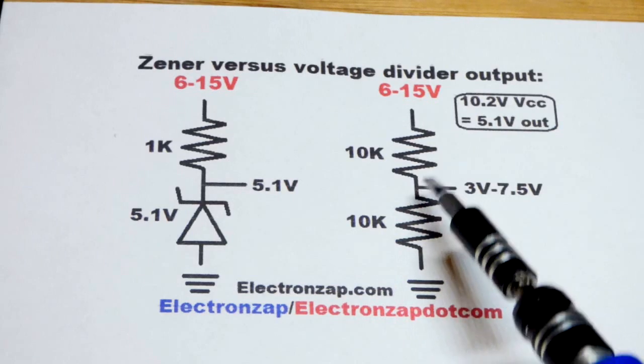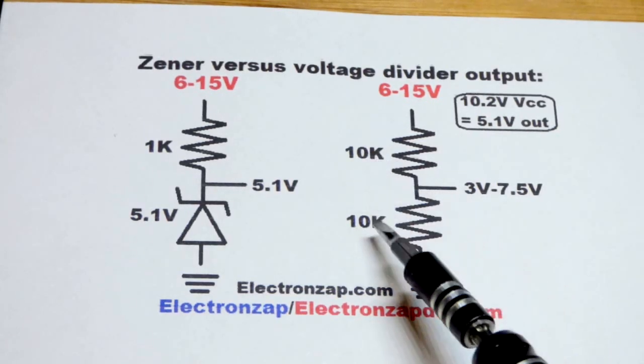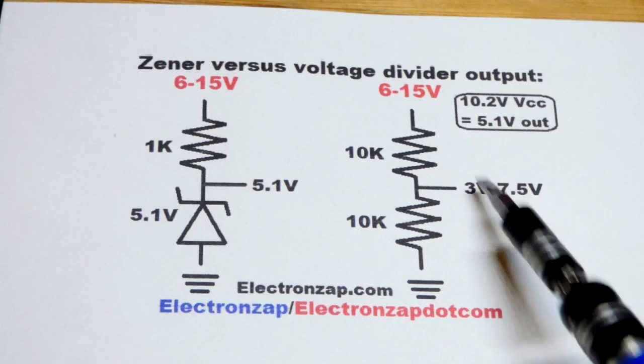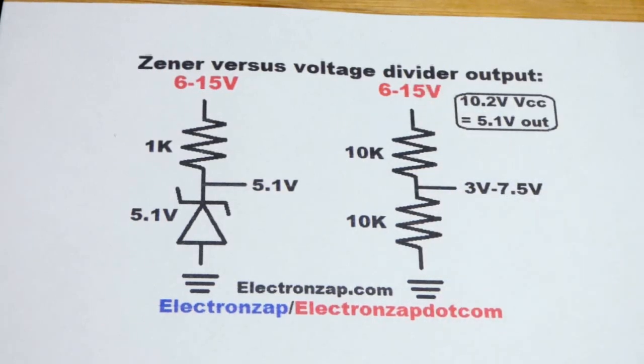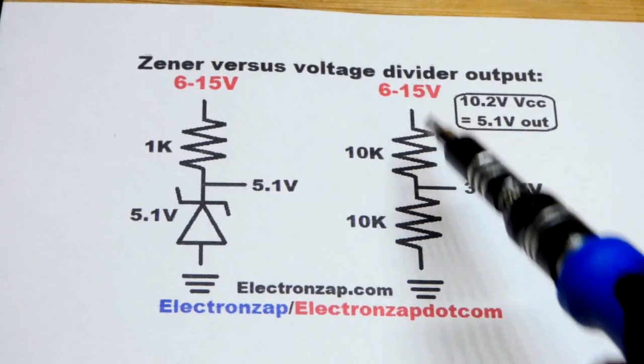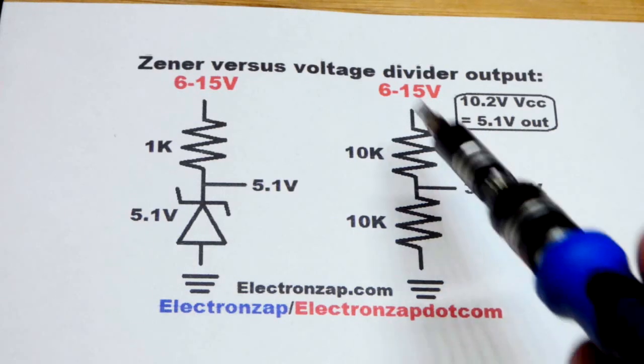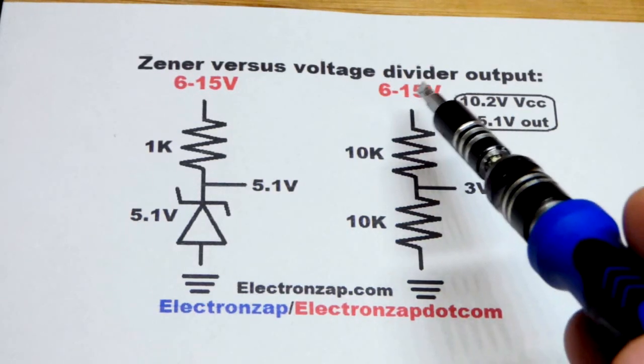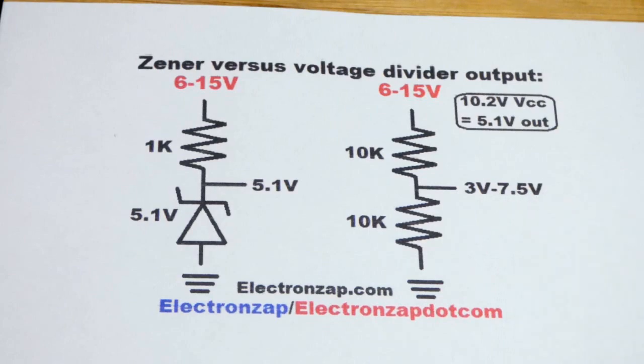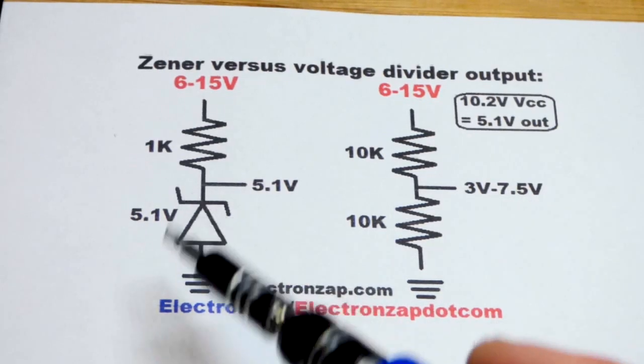Most specifically when they're equal value. So when fixed value resistor voltage dividers are equal value on both sides, you end up with half the supply voltage. And so that makes it pretty simple, half of the supply voltage. If it's 6 volts we get 3 volts out, 15 volts supply voltage we get about 7.5 volts out.